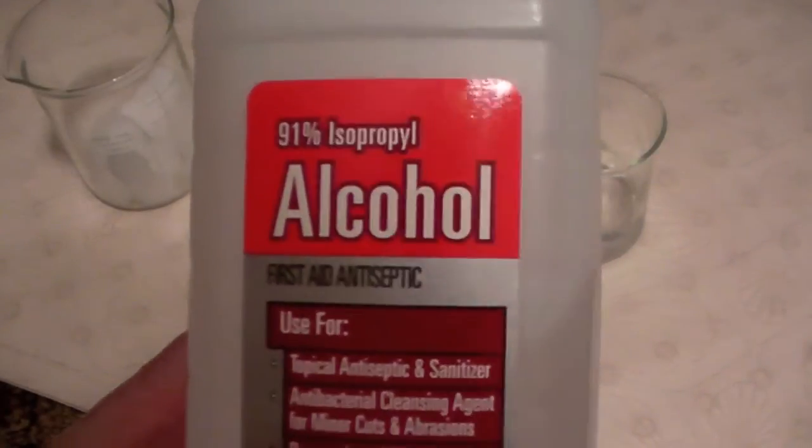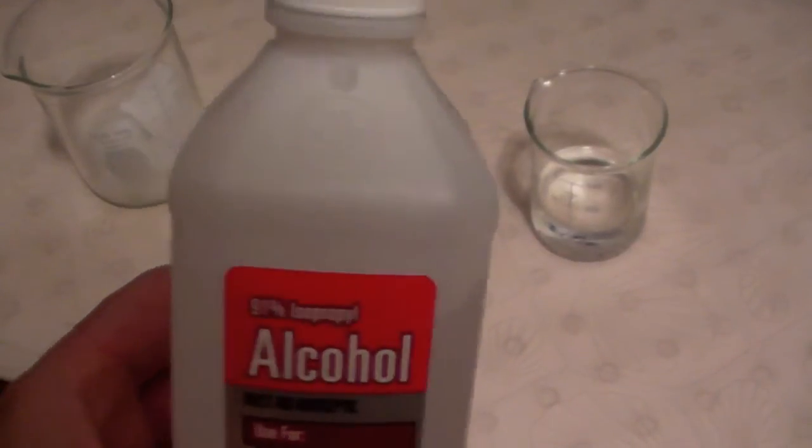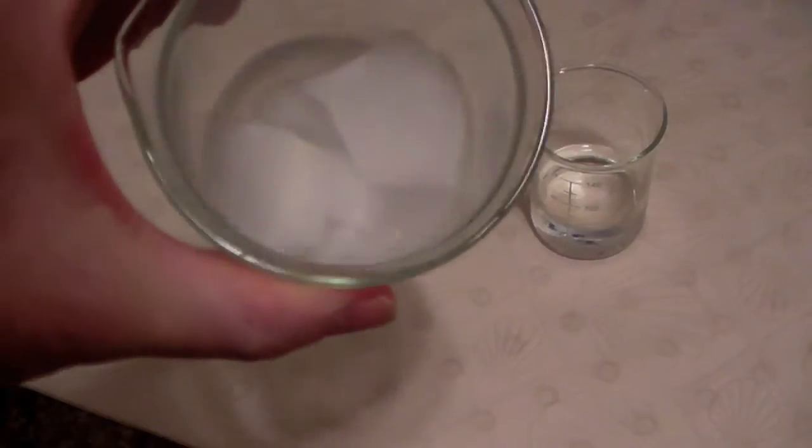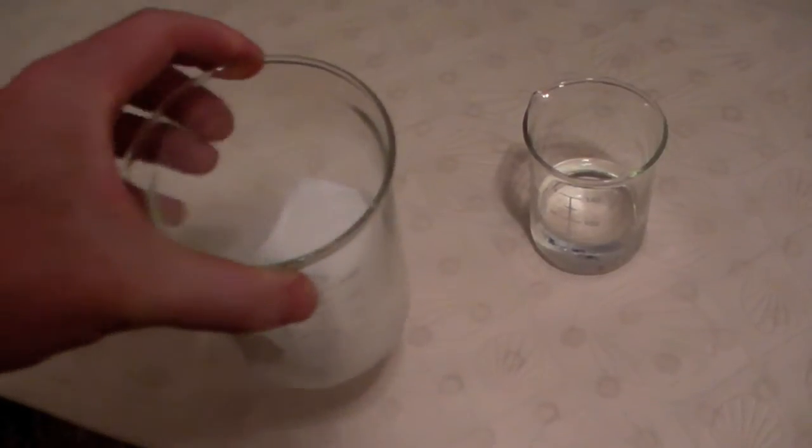Okay, room temperature isopropyl alcohol. It looks just like water, so just for the heck of it, let's see what it looks like if we cool it down. We'll cool it down with some dry ice and see what it looks like.